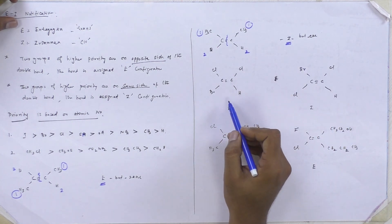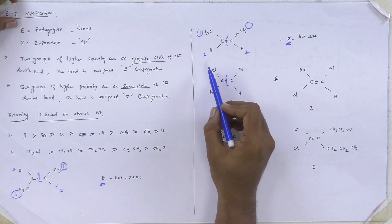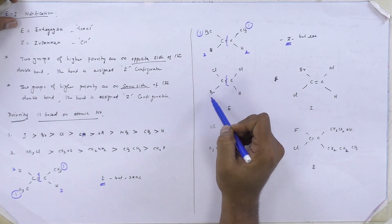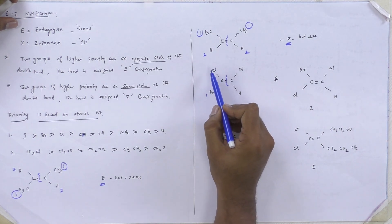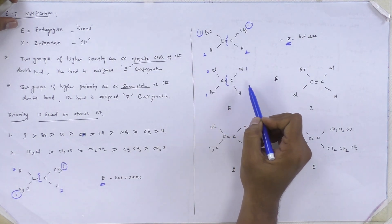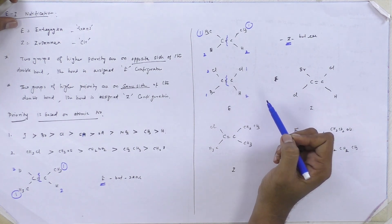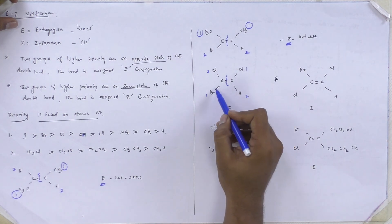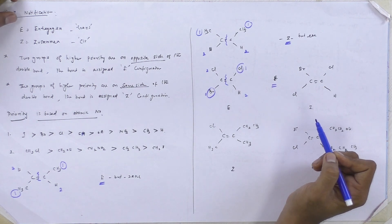Next example. Now we split into two parts. Chlorine or bromine — bromine has the highest atomic number. Bromine is highest priority, then chlorine. Here chlorine is first and hydrogen is least priority. Now the highest priority is on the opposite side, so we can give the E configuration.